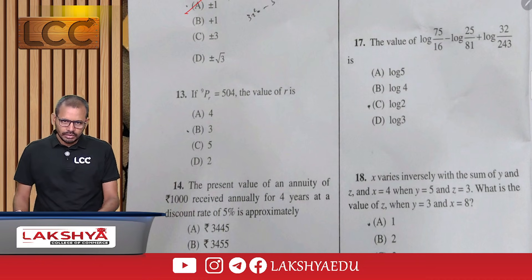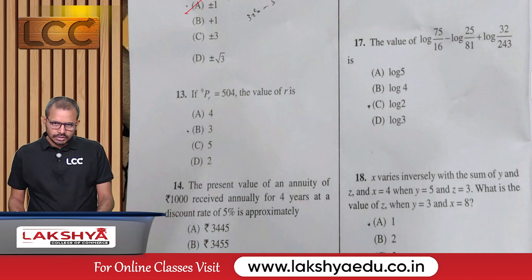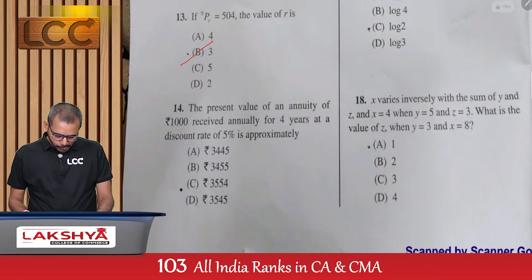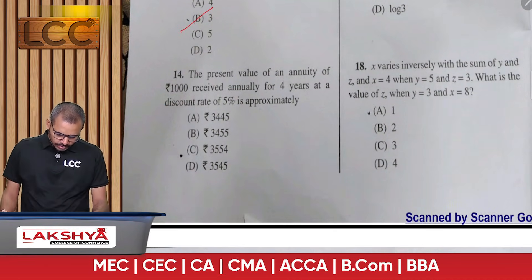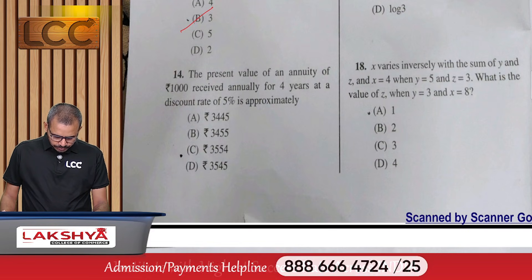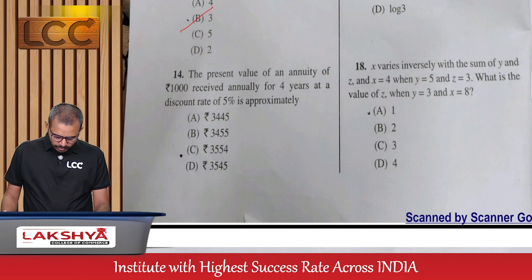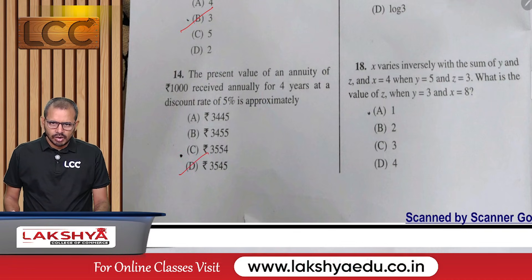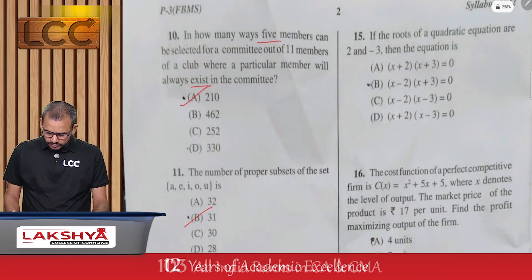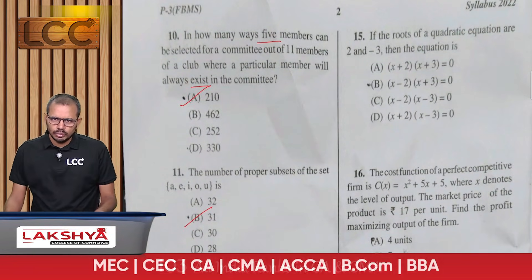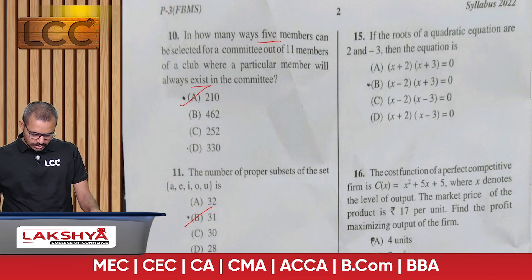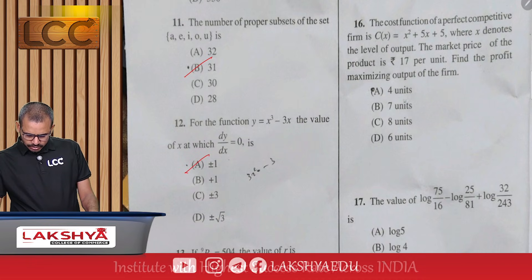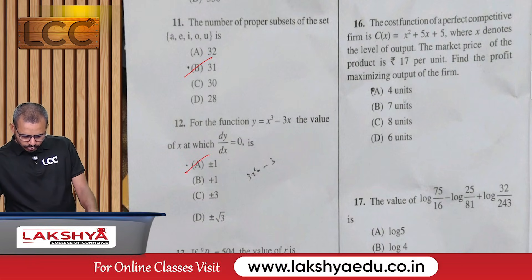Question 13: 9Pr = 504, find the value of r — option B. Question 14: The present value of an annuity of ₹1000 received annually for 4 years at a discount rate of 5% approximately — option D. Question 15: The roots of a quadratic equation are 2 and -3, find the equation — option B.